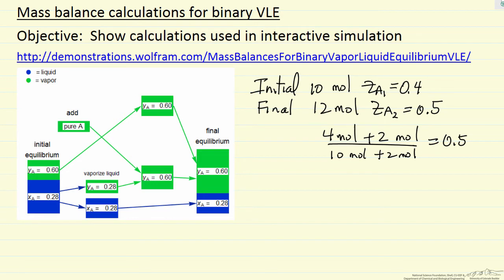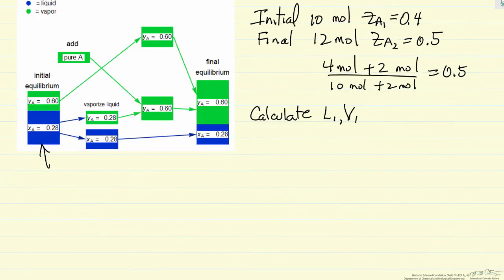What we want to do first is calculate how much liquid, how much vapor we have at our starting condition. We'll do a mass balance and say the total moles of A in our system corresponds to moles of A in the liquid phase plus moles of A in the vapor phase.